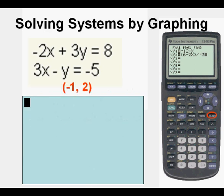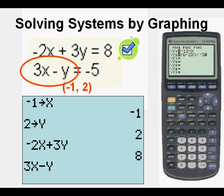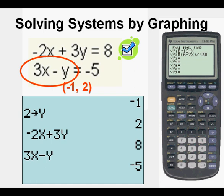So we write our answers down someplace where we can put them in. And we put negative 1 storage x and 2 storage y. And we type in our first expression, which is negative 2x plus 3y. And we get 8. Check. We next type in 3x minus y. Press enter. We get negative 5. And so that checks as well.